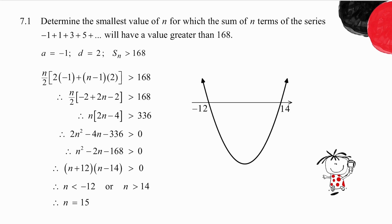Now you know the formula for the sum of an arithmetic progression is this. So what I do is I substitute. In place of a goes minus 1. In place of d goes 2. And the sum must be greater than 168.